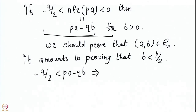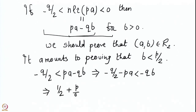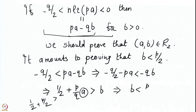This implies that −q/2 − p·a < −q·b, and multiplying by −1 everywhere and cancelling q gives (1/2) + (p/q)·a > b. Then, since a < q/2, this quantity is less than 1/2 + p/2. Therefore b, being an integer less than (p+1)/2, must actually satisfy b < p/2.